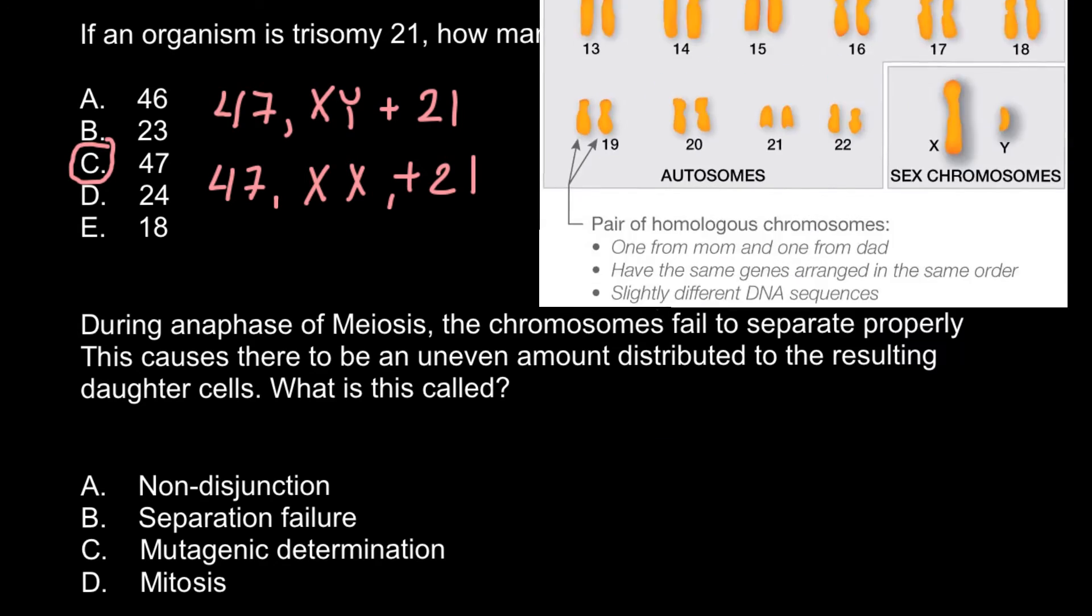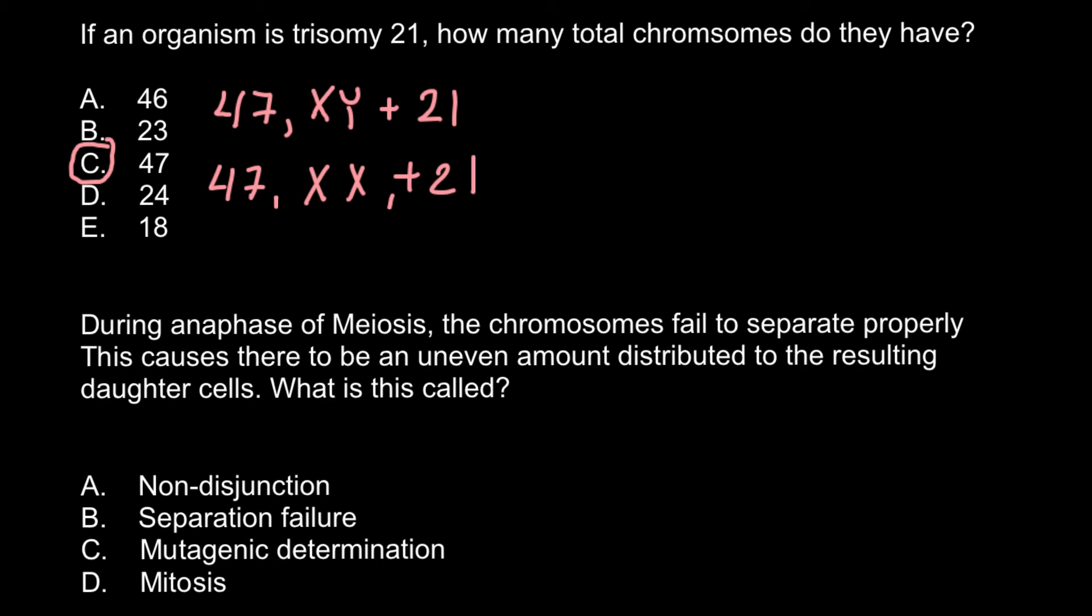And next question. During anaphase of meiosis, the chromosomes fail to separate properly. This causes there to be an uneven amount distributed to the resulting daughter cells. What is this called? And we have four answers here.